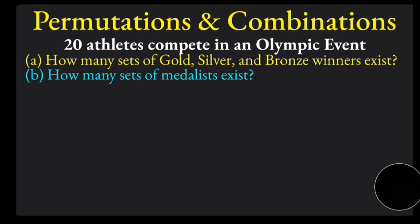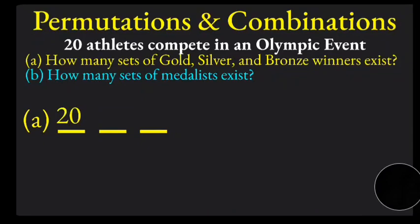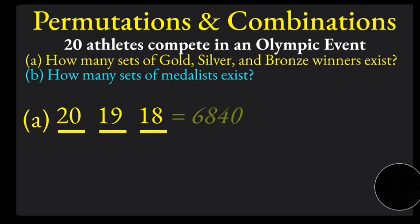To start this off, we'll do part A first. One way to approach this is to draw three lines that represent the podium. For the first spot on the podium, there are 20 possibilities for winners of that particular medal. Now that we've populated that spot, the next spot has only 19 possibilities, and then finally that leaves 18 possibilities for the third location. If we multiply all those numbers together, you get 6840 permutations or arrangements of people on the podium.